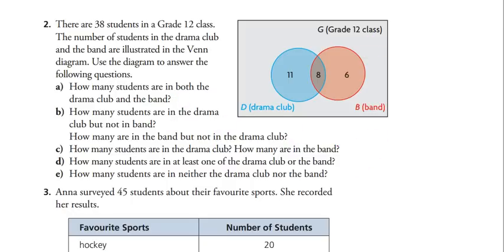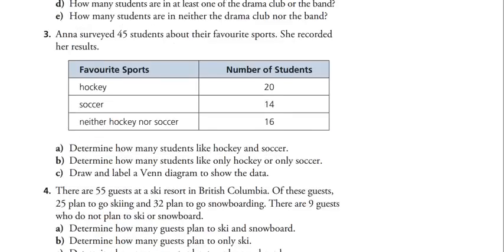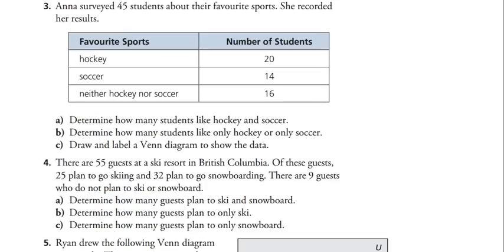Anna surveyed 45 students about their favorite sports. She recorded results for hockey, soccer, and neither hockey nor soccer. The easiest way to answer this is to draw the Venn diagram first, rather than trying to figure out how many like hockey and soccer directly. Let's see the picture.